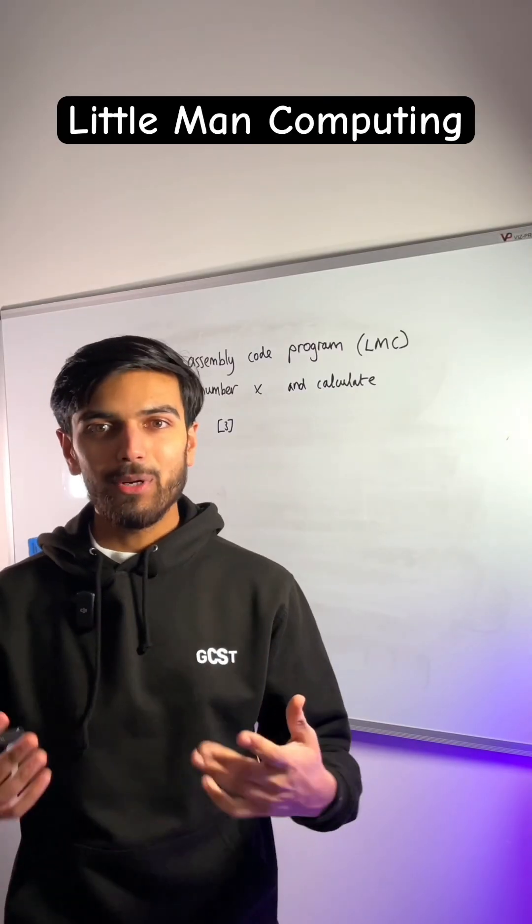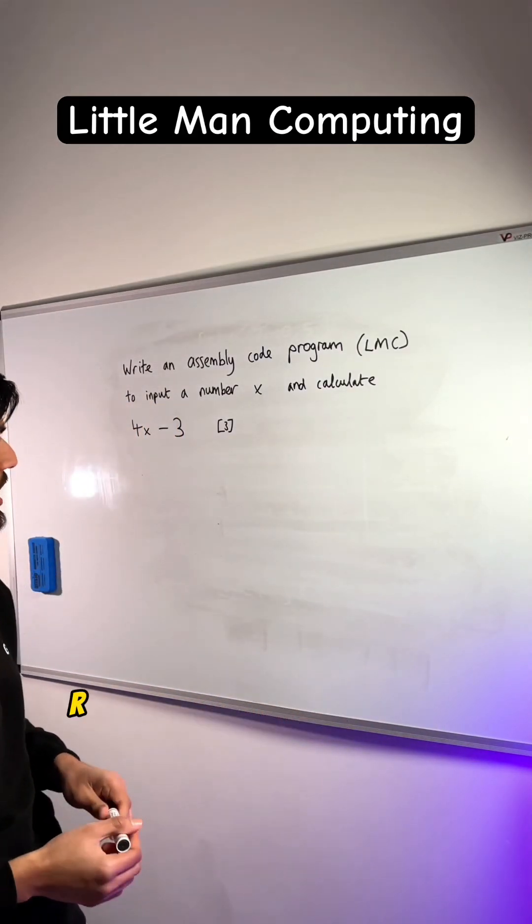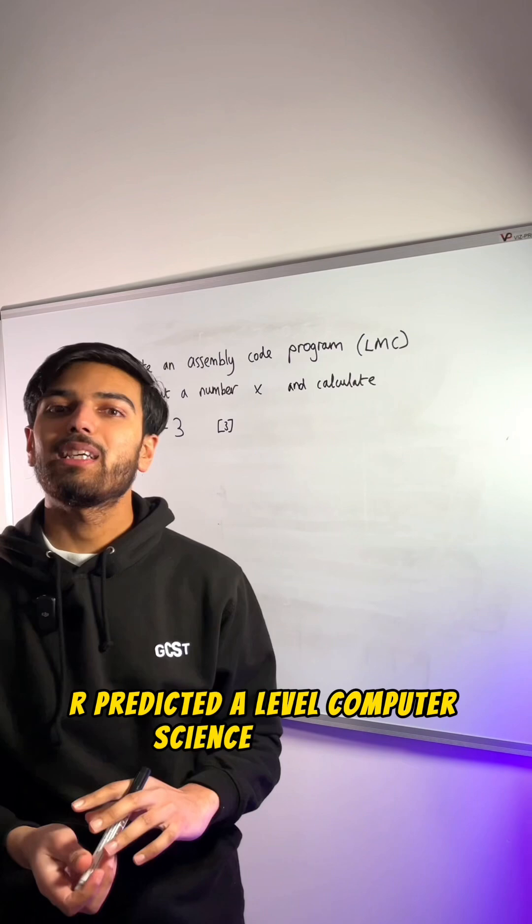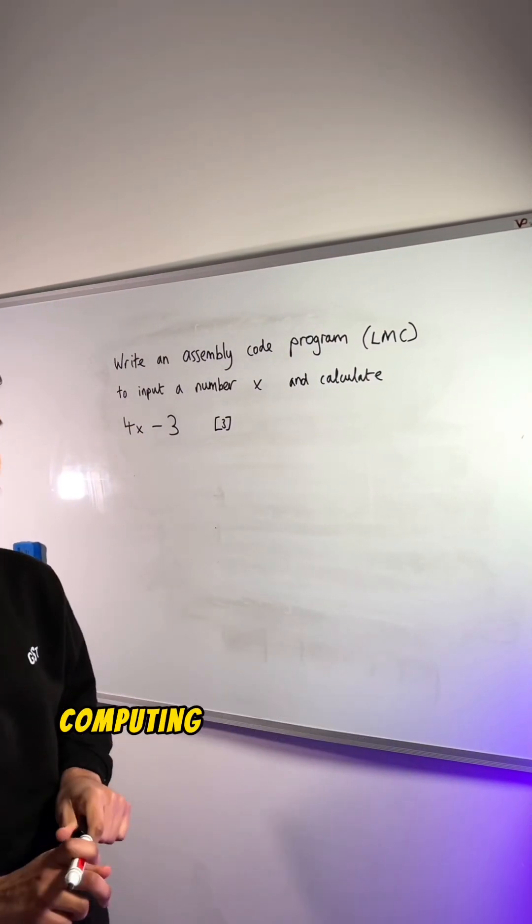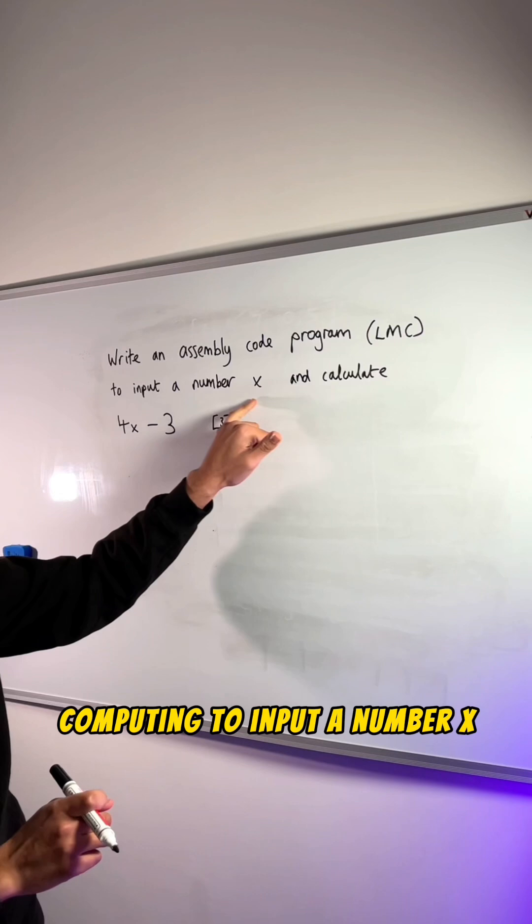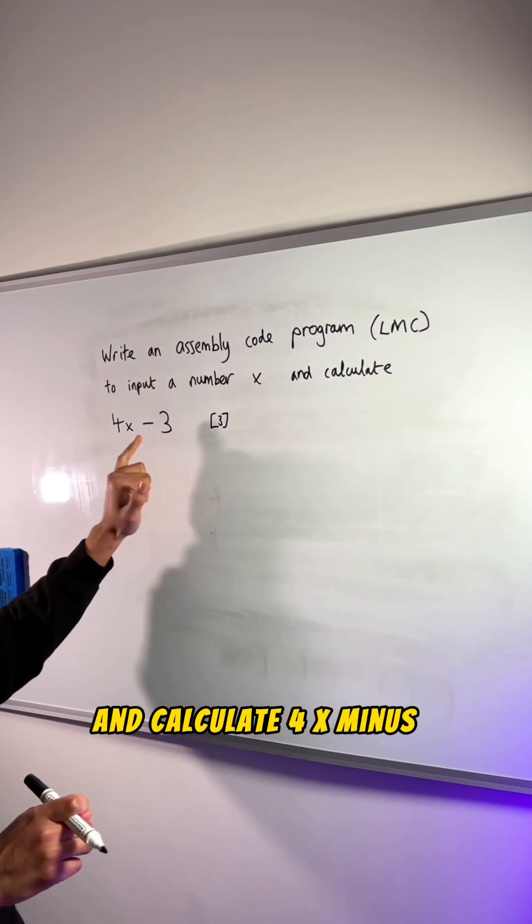Anyways, here's a 2025 OCR predicted A-level computer science question: write an assembly code program using little man computing to input a number x and calculate 4x minus 3.